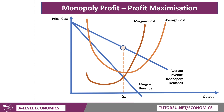So you draw up to the demand curve, and that is the price the monopoly can charge. The monopoly has some price-setting power, but they're constrained by the demand curve, so they can't charge more than P1 for output Q1. They are limited in that sense by the demand curve, and also by the elasticity of demand. So that's the price they're going to charge.